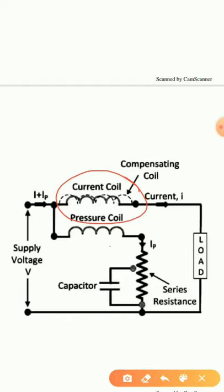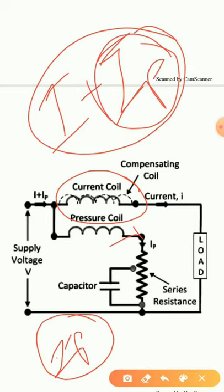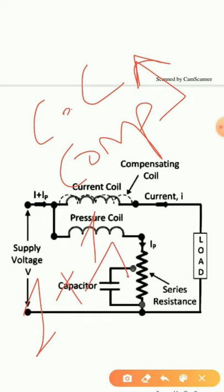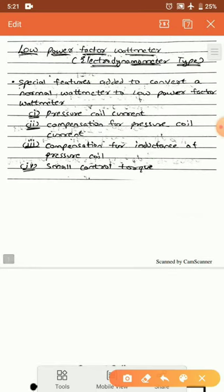To compensate for the extra current drawn by the pressure coil, a compensating coil is added in series with the current coil. Through mutual induction, this compensating coil also carries a current of Ip, but in opposition to the current coil. So if the current coil carries I + Ip and the compensating coil opposes with Ip, the net effect is that +Ip and −Ip cancel, and the current coil effectively shows only I. This is the second feature to be added.